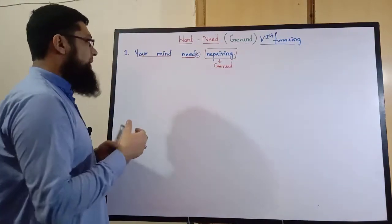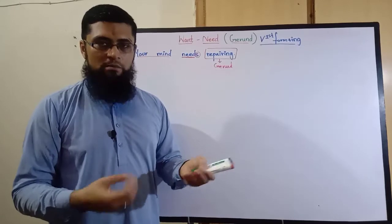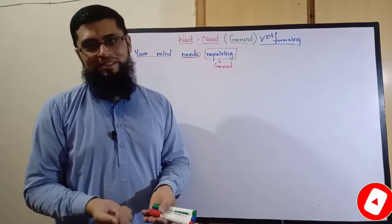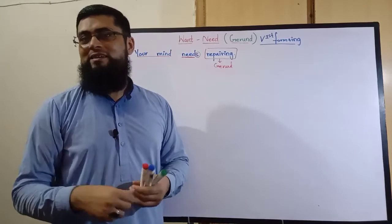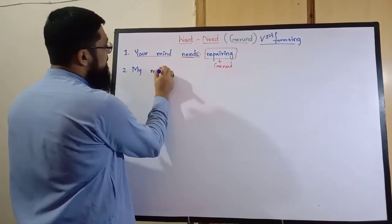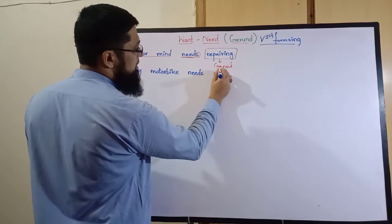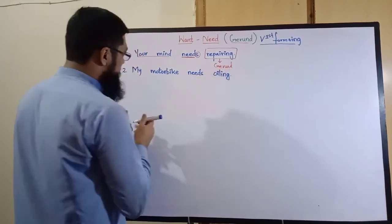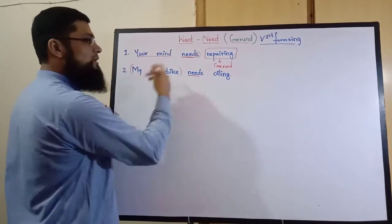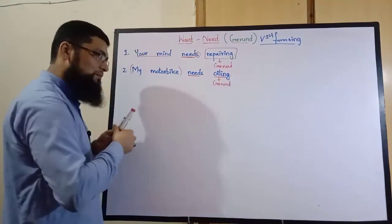اگلی مثال: 'میری motorcycle کو تیل ملنے والا ہے' یعنی engine oil کی ضرورت ہے۔ اس کا انگریزی ترجمہ ہے: 'My motorbike needs oiling.' اس میں بھی ہم نے need کے ساتھ s کا اضافہ کیا کیونکہ یہ indefinite جملہ ہے اور subject singular ہے، اور آخر میں gerund 'oiling' استعمال کیا۔